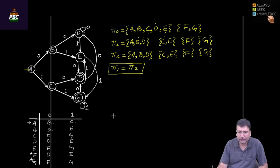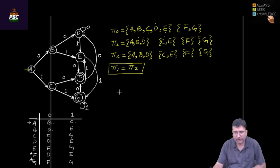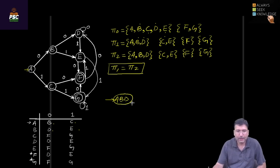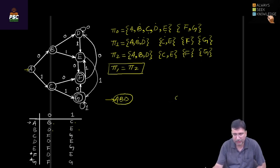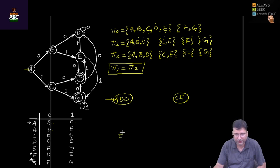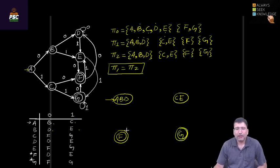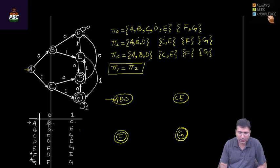Now we can draw the minimized DFA. We combine states a, b, and d into one class — this will be the initial state since a was initial. Another class is c and e, which is non-final. f and g are final states and remain as separate classes. For the transitions: on a-b-d, zero input keeps us in the same class since a leads to b and b leads to d, both in the a-b-d class — so there is a self-loop for zero.